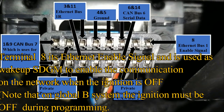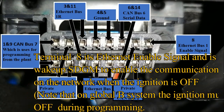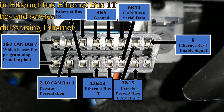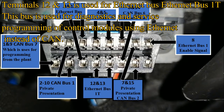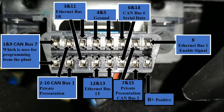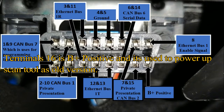Terminals 12 and 13 are used for Ethernet bus 1T. This is used for diagnosis and service programming of control modules using Ethernet instead of CAN. Terminal 16, as usual, is positive — it's used to power up the scan tool.